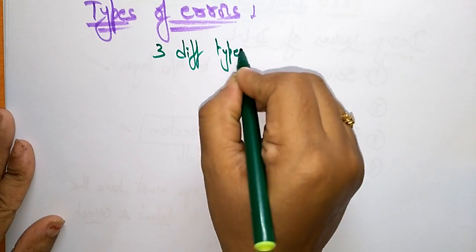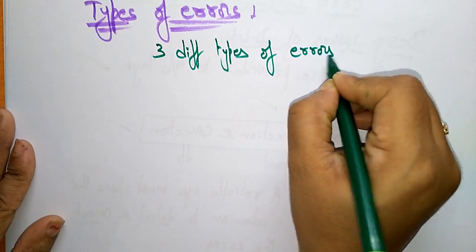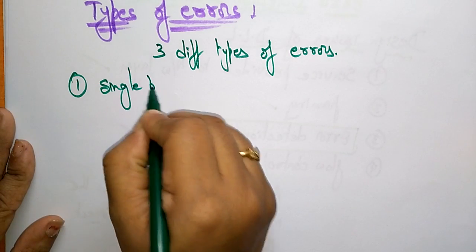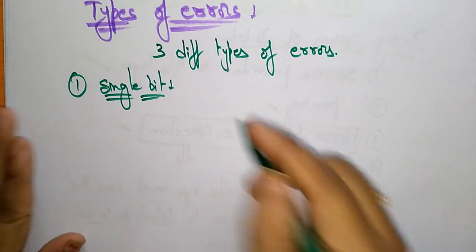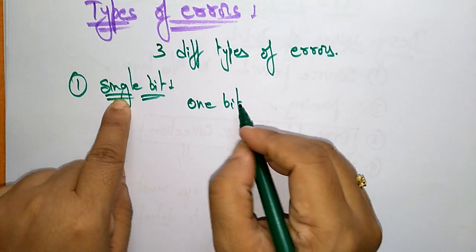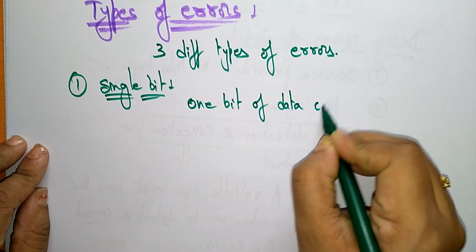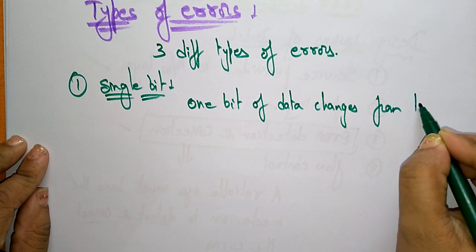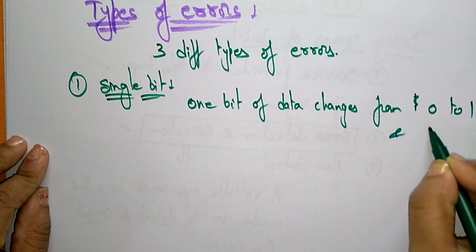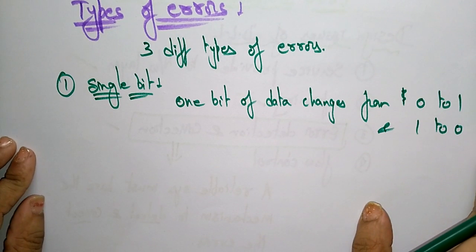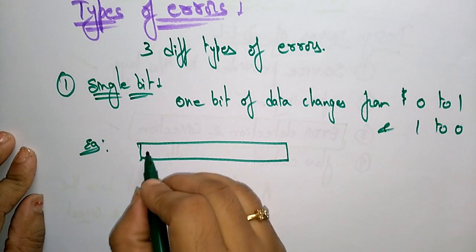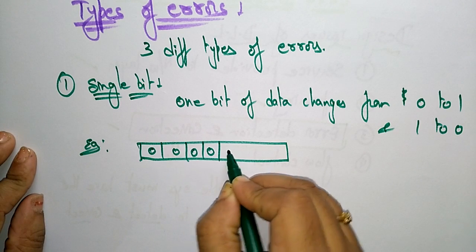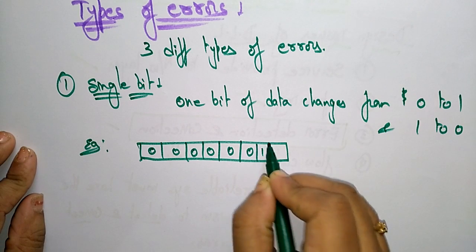There are three different types of errors. The first one is the single bit error. A single bit error means one bit of a data unit is changed from 0 to 1 or 1 to 0 — only one bit of data changes. That is why we call it a single bit error. Let me explain with an example.